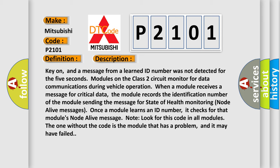Once a module learns an ID number, it checks for that module's node alive message. Note: Look for this code in all modules. The one without the code is the module that has a problem, and it may have failed.